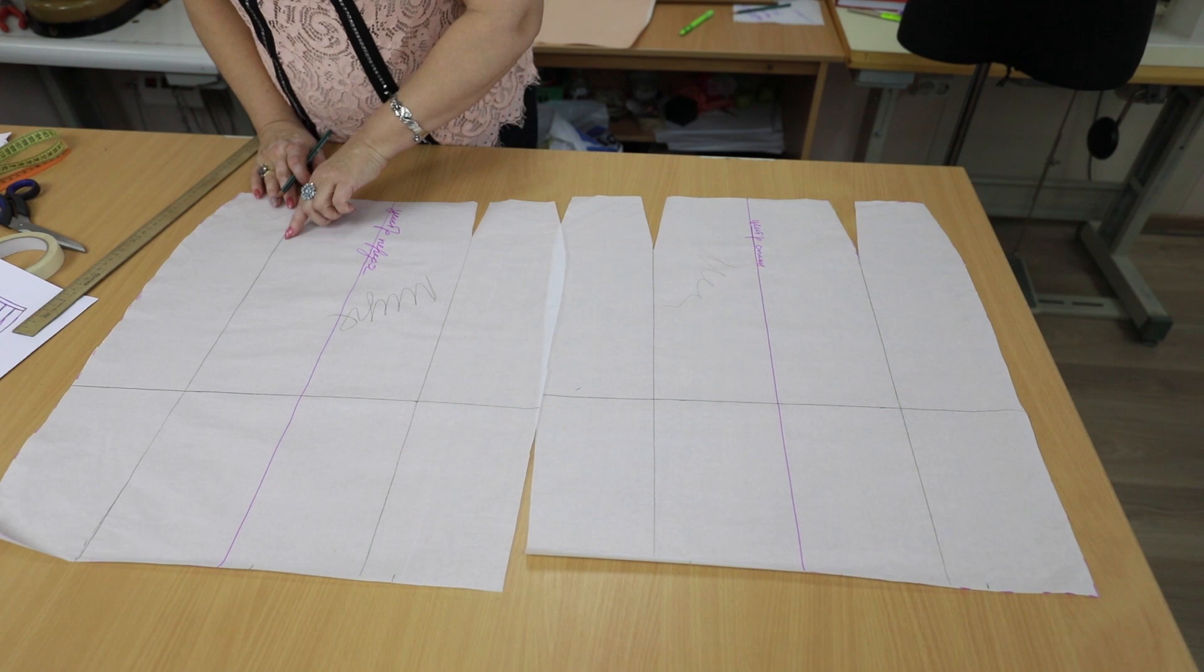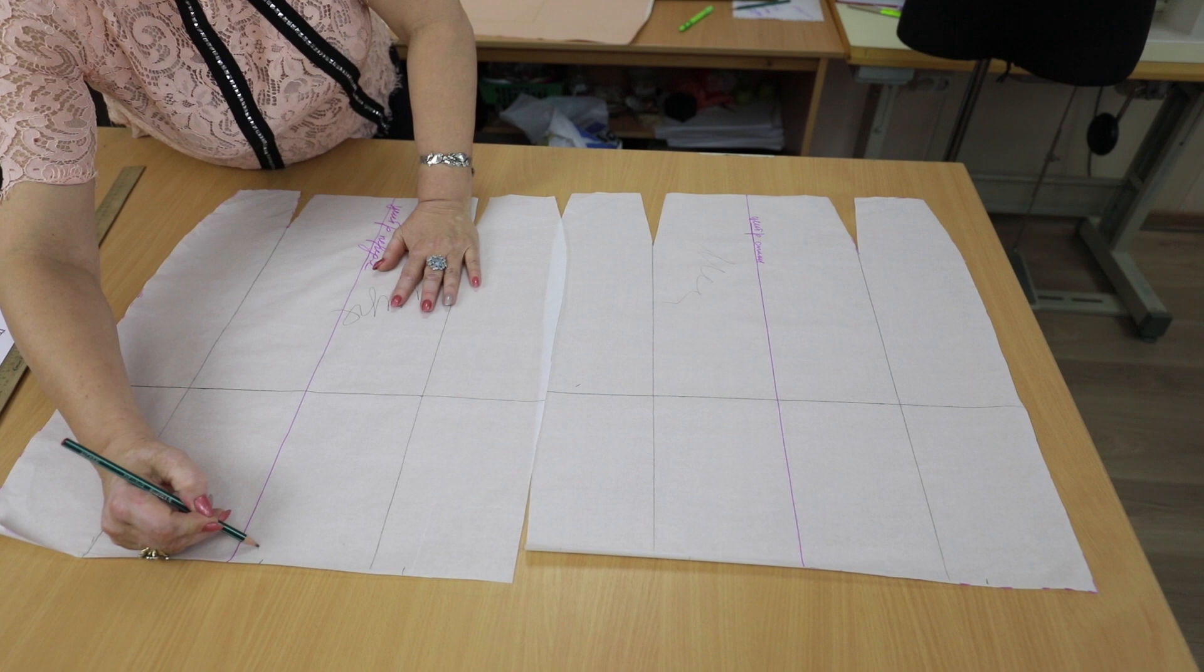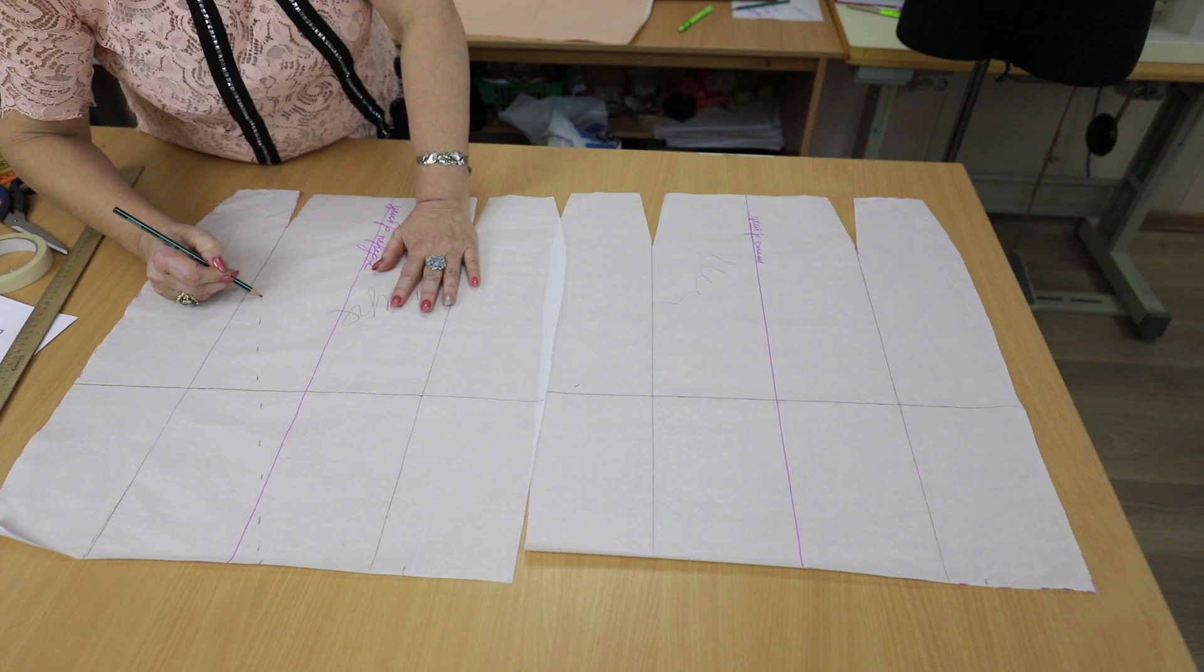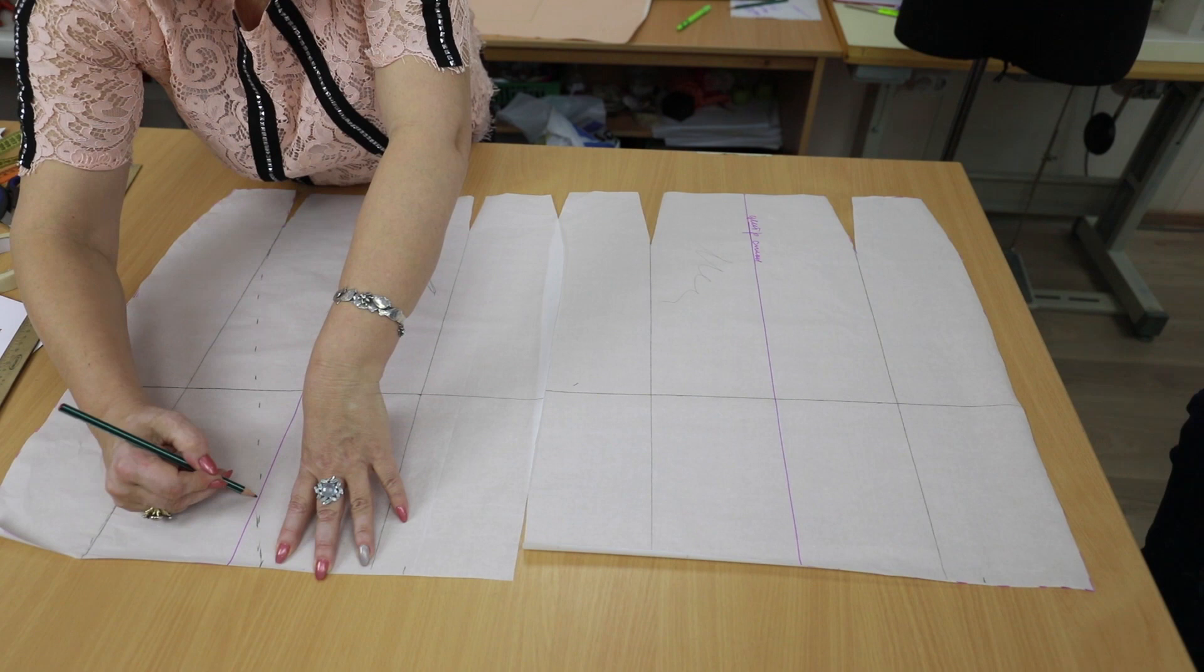Now I draw the first gore from here to this point. Make a beautiful round line. We'll cut it out and use it as a model for the next gores. I want to make it a bit more round.